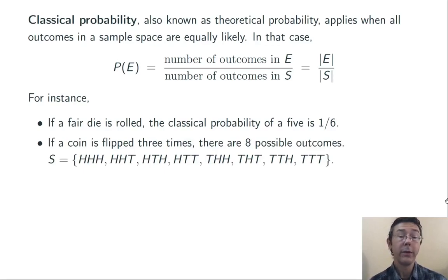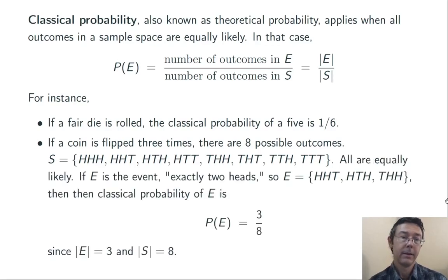If we flip a fair coin three times, we have eight possible outcomes, listed here, all of them equally likely. Let's let E be the event that we get exactly two heads. There's three outcomes in that event: heads, heads, tails; heads, tails, heads; and tails, heads, heads. So the classical probability of the event E is going to be 3 divided by 8. There's three equally likely ways of getting exactly two heads out of eight equally likely outcomes possible in total.